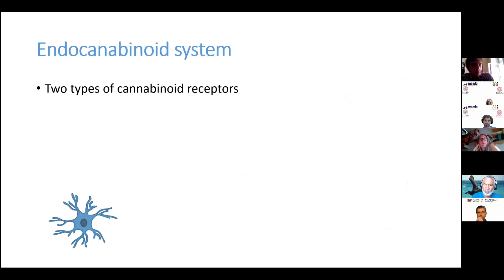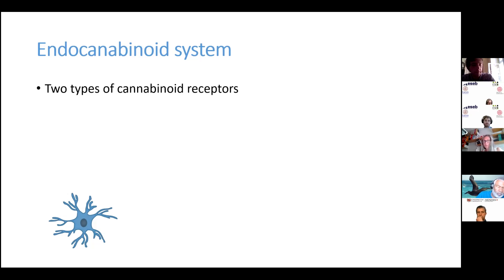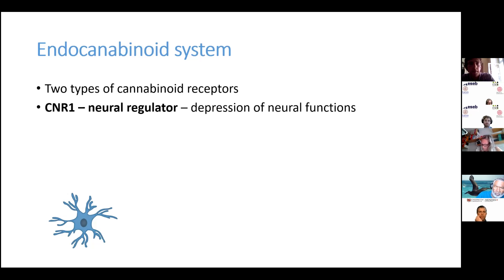Our focus is on neural-immune interactions, and we may see that there may be some cross-link through the endocannabinoid system, which consists of two types of receptors. The first one is the CNR1 receptor, which is expressed in neurons.